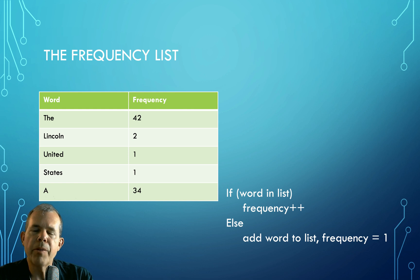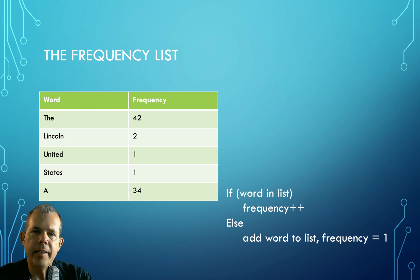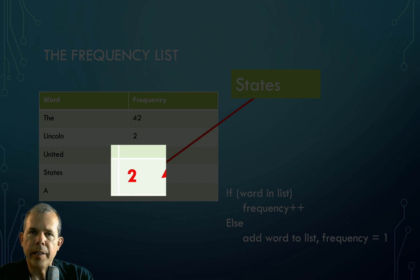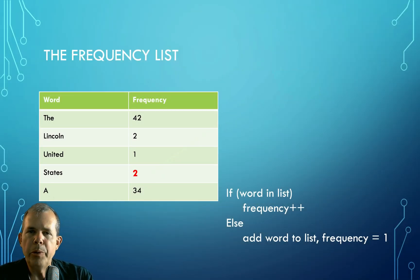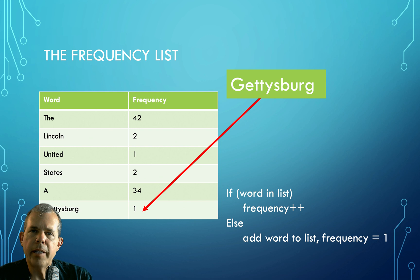Here's what the algorithm is going to look like today. We're building a frequency list where column one is the word and column two is the frequency of how often that word occurs. If the next word — say 'states' — is already in the list, we increment its frequency by one. If the next word — say 'Gettysburg' — does not appear in the list, we add a new row and set its frequency to one. We do that for every word, and when we're done we have a frequency counter.